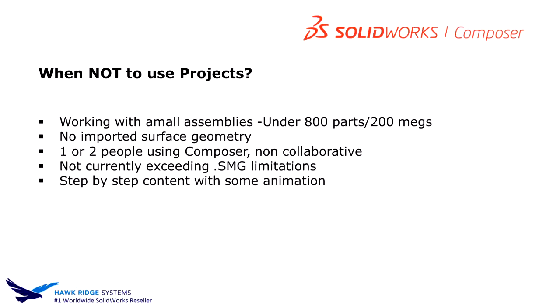The reason is: if you don't need to, why make things more difficult than they need to be? If you're working with small assemblies — typically under 800 parts, in the 200-meg ballpark range in SolidWorks — and you bring that into Composer, it's about a 45-to-1 ratio in file size. So a 45-meg SolidWorks file becomes about a 1-meg file in Composer. With that, we can bring really large assemblies into Composer and work in a single SMG file interface, and it works great.